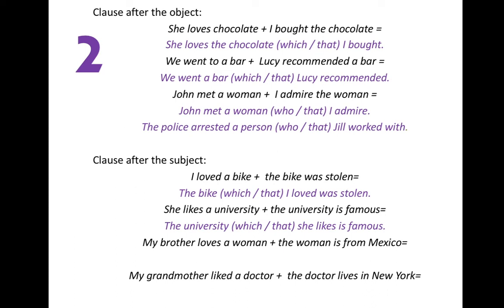Next: 'My brother loves a woman' and 'The woman is from Mexico.' Connecting them: 'The woman who my brother loves is from Mexico' or 'The woman that my brother loves is from Mexico.' The relative pronoun is 'who' or 'that,' and the relative clause is 'who — or that — my brother loves.' My brother loves a woman — we use 'who' or 'that' to replace 'the woman,' and 'the woman' is the object of the verb 'love.'